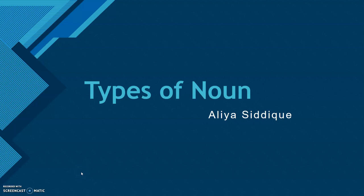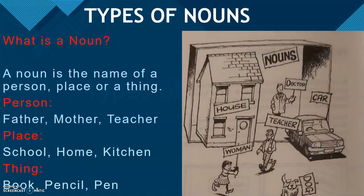In today's lesson, we are to talk about types of nouns. Now, what is a noun? A noun is the name of a person, place, or a thing.